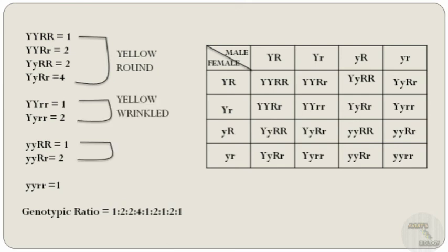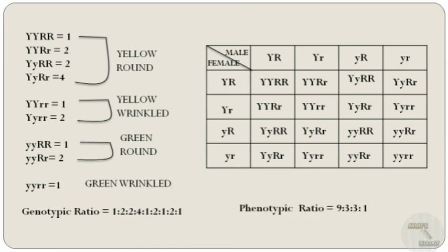YYRR, YYRr, YyRR, and YyRr represent the yellow round-seeded pea plant. YYrr and Yyrr represent the yellow wrinkled-seeded pea plant. yyRR and yyRr represent the green round-seeded pea plant. Finally, yyrr represents the green wrinkled-seeded pea plant. The phenotypic ratio is 9:3:3:1.